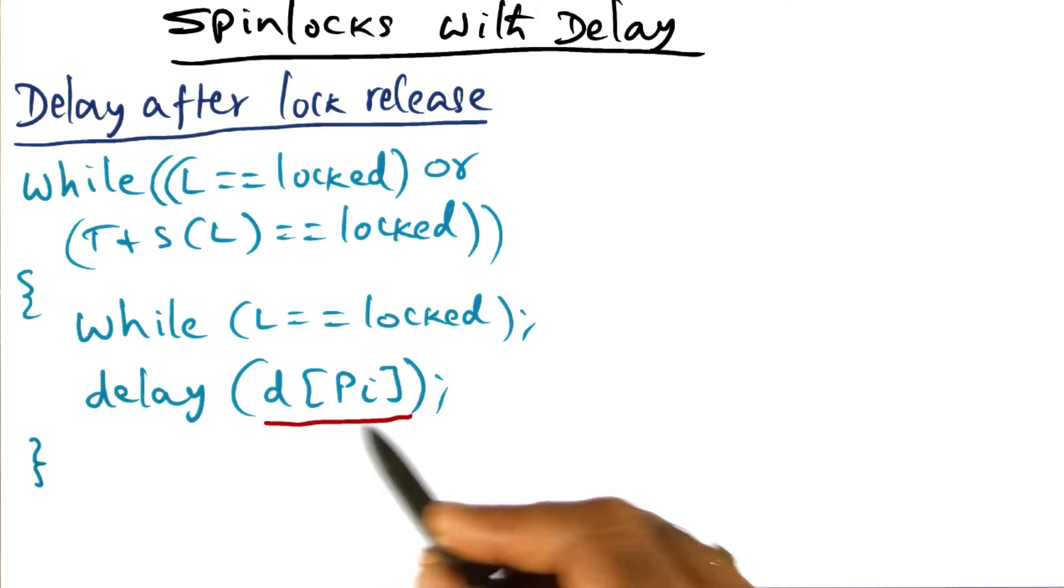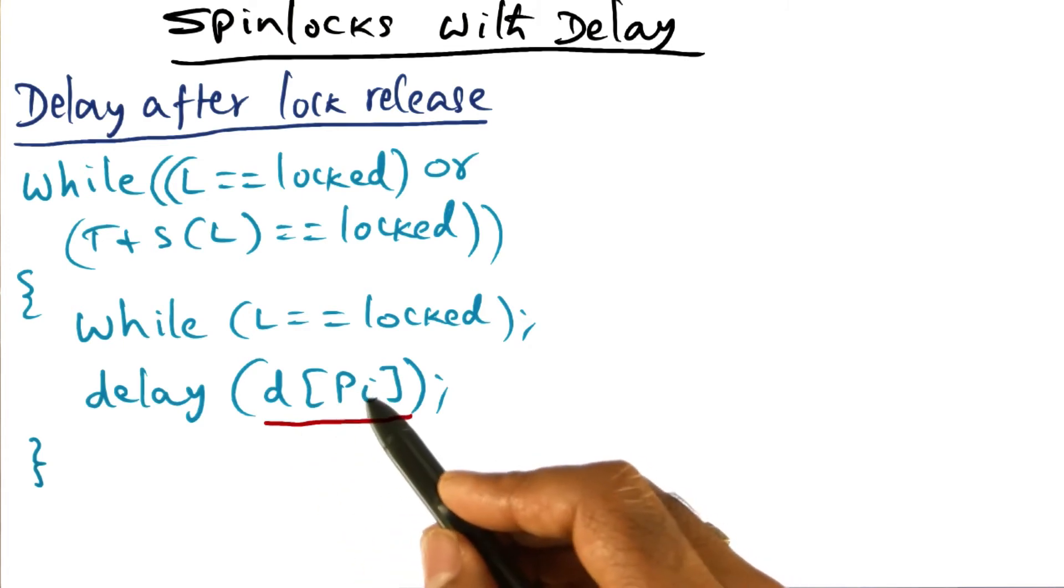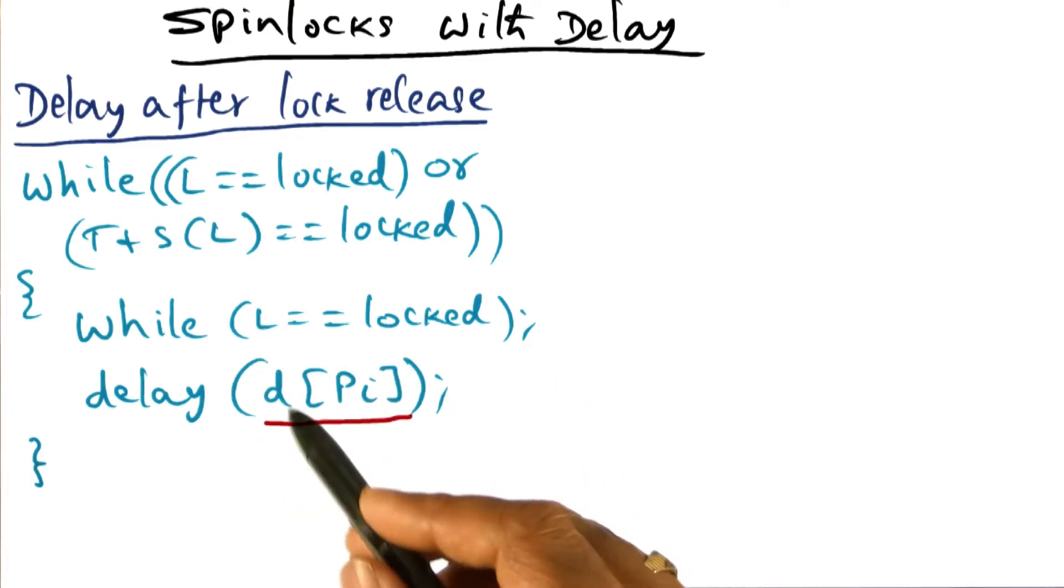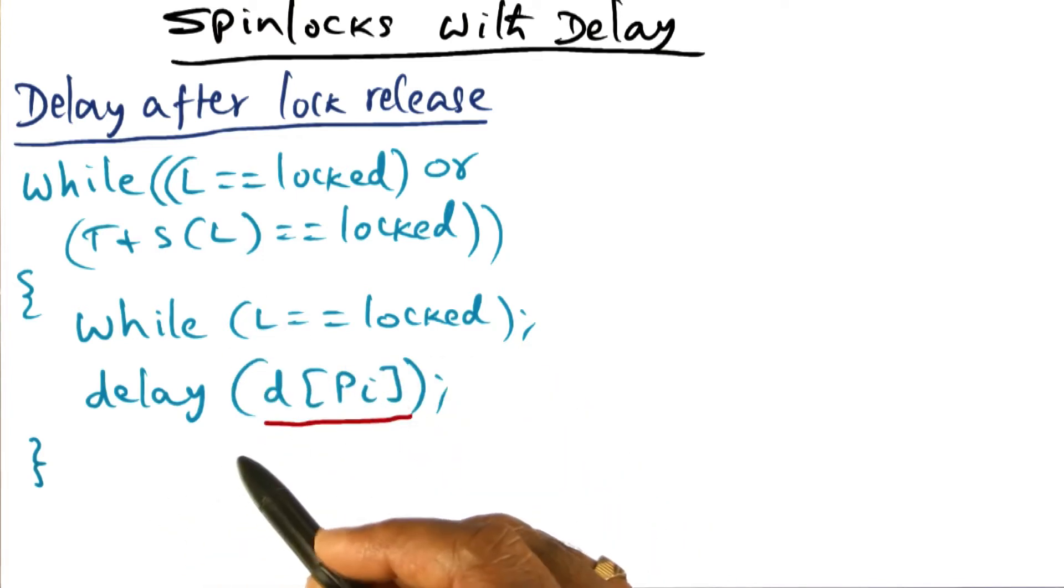Now the problem with this is there's a static delay. So every processor has been pre-assigned a certain amount of delay, which means that even if the lock is available, I may not immediately go and check because my delay may be very high compared to some other processor. And that's always an issue when you have static decision making.